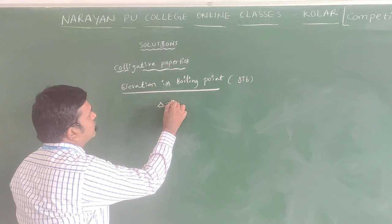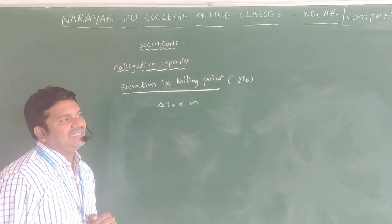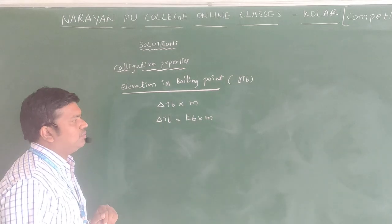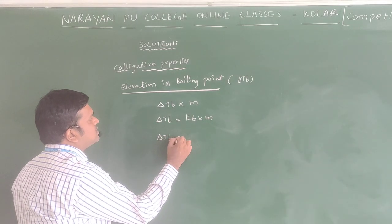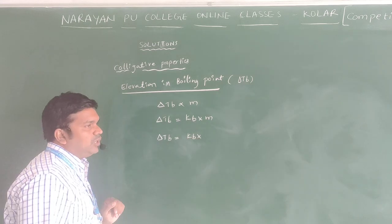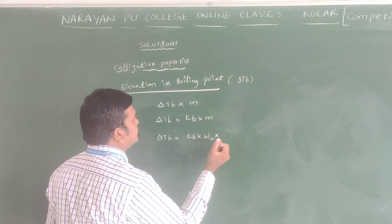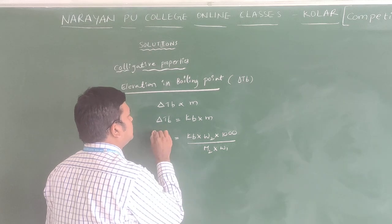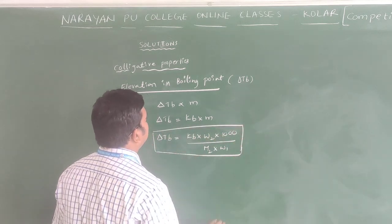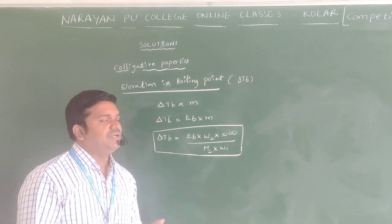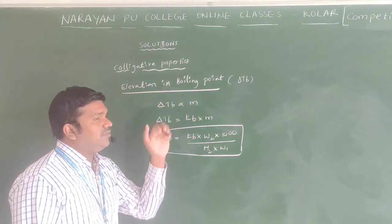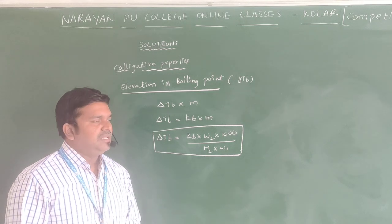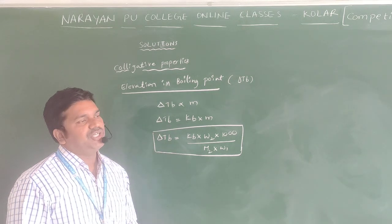Delta Tb is directly proportional to molality. Delta Tb equals Kb multiplied by m. Expanding the molality formula: Delta Tb equals W2 times Kb times 1000, divided by M2 times W1. This formula is used to identify the elevation in boiling point. In this, we mainly identify the molecular mass of the solute, and sometimes the boiling point of the solution.